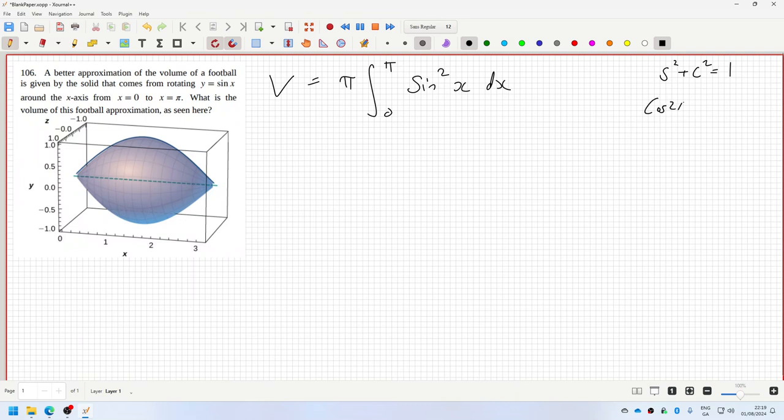Cos 2a is cos squared minus sine squared, and I want sine squared. So if I subtract, one minus cos 2a equals two sine squared.